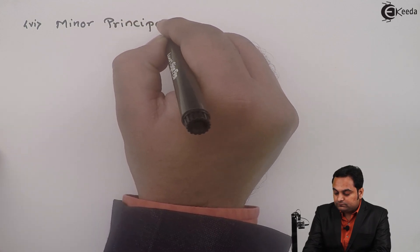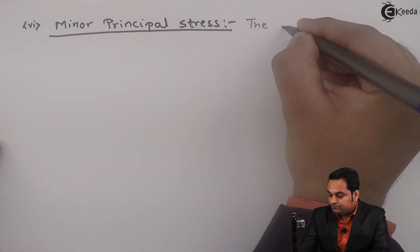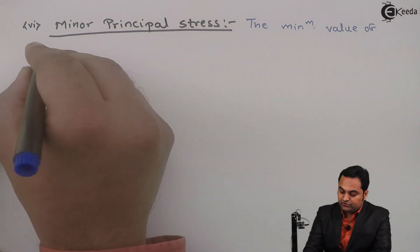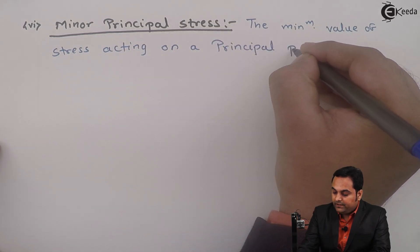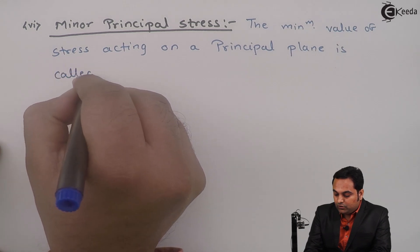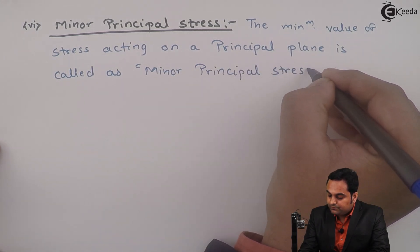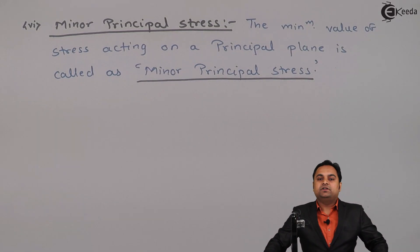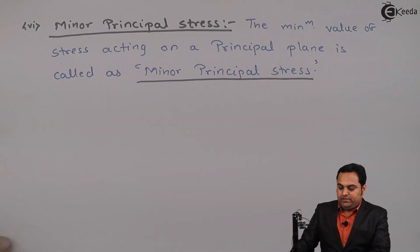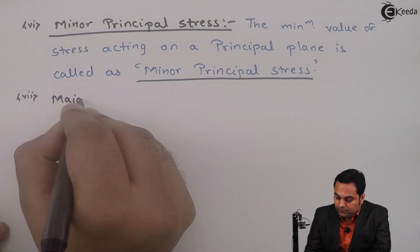Next, minor principal stress. The minimum value of stress acting on a principal plane is called minor principal stress. So the least value of stress acting on the principal plane is called minor principal stress.